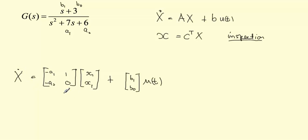That's how that's going to come about and then our x would be 1, 0 multiplied by this state-space vector x1, x2